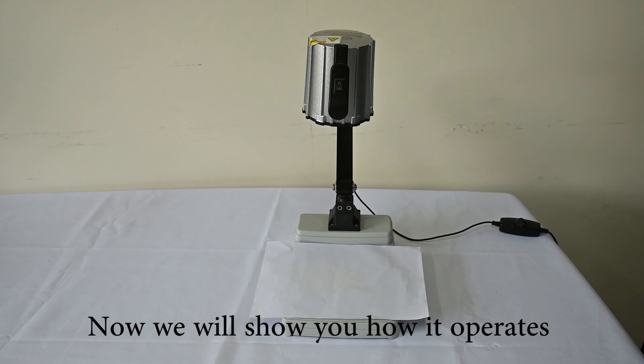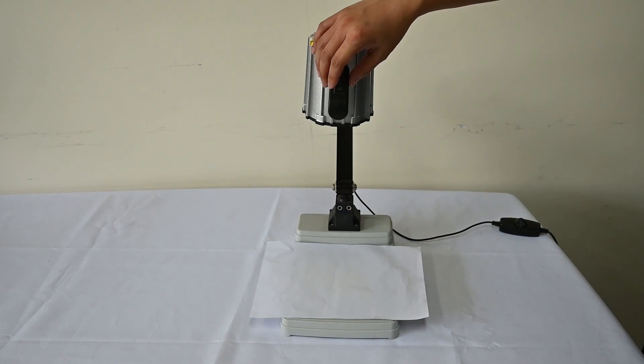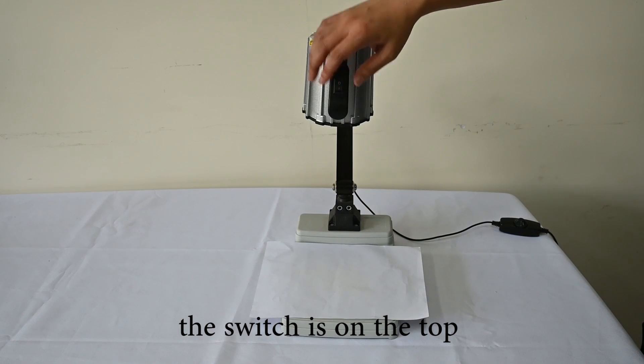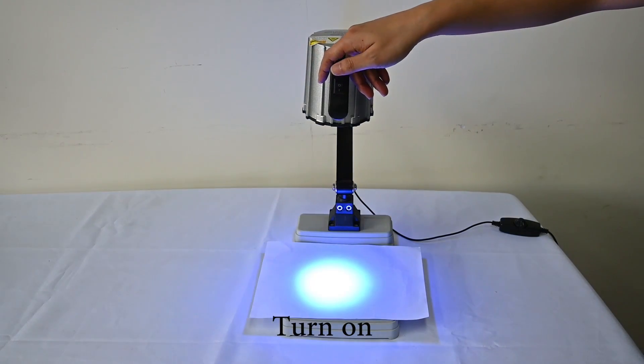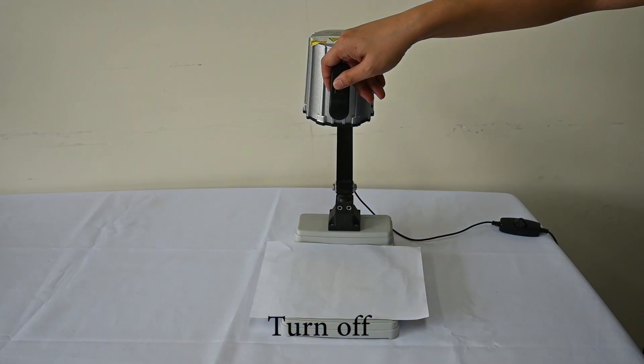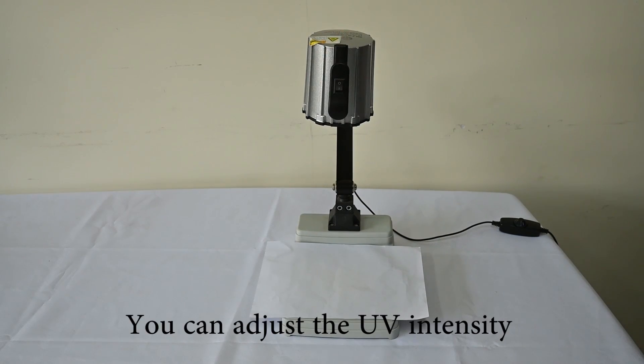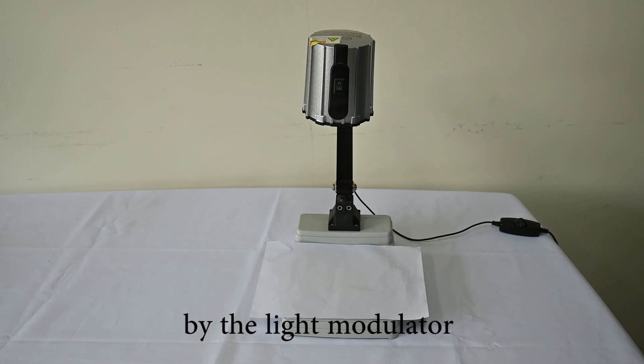Now we'll show you how it operates. As I mentioned before, the switch is on the top. Turn on, turn off. You can also adjust the UV intensity using the LED modulator.